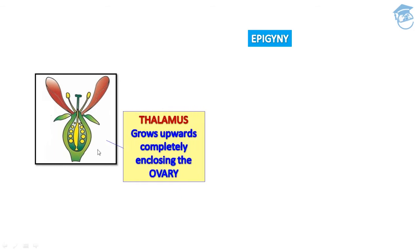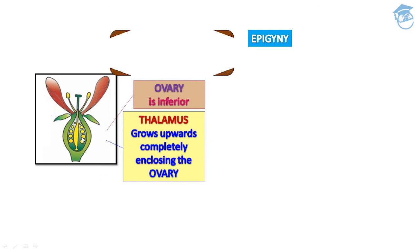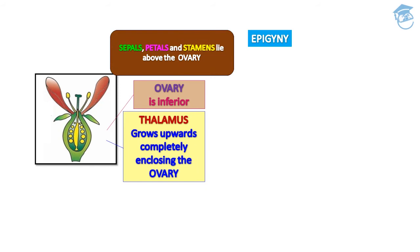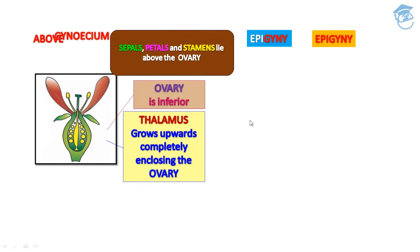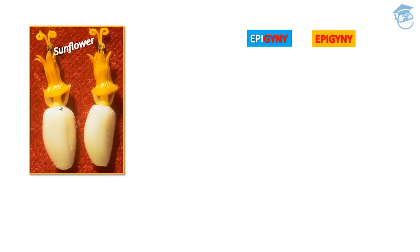In epigyny, the third basic type, the thalamus grows upward and completely encloses the ovary; the ovary is inferior. Sepal, petal, and stamens lie above the ovary — 'epi' means above 'gyny' means gynoecium. Example of epigyny is sunflower, where the thalamus completely encloses the ovary.